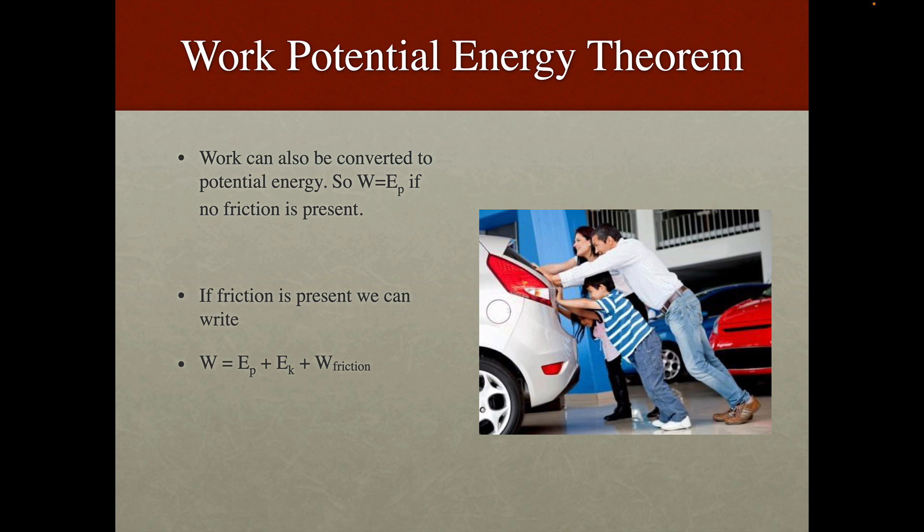Now work potential energy theorem. Work can also be converted to potential energy, so you can say work equals EP if no friction is present. So if friction is present, you could write work equals EP plus EK plus work done to overcome friction.